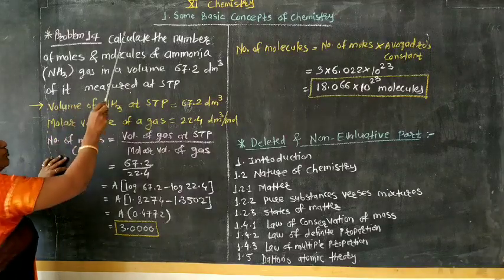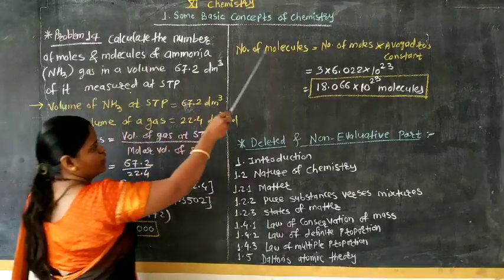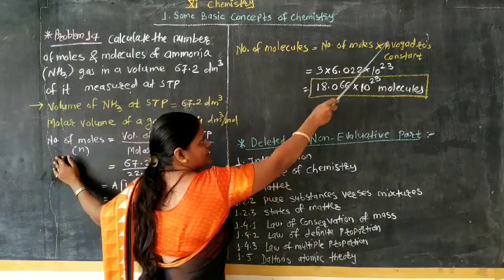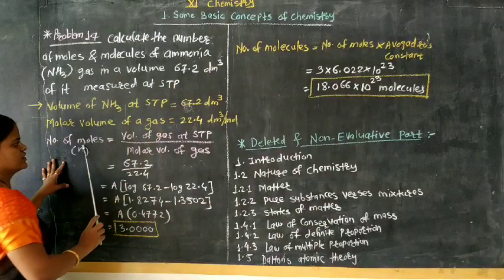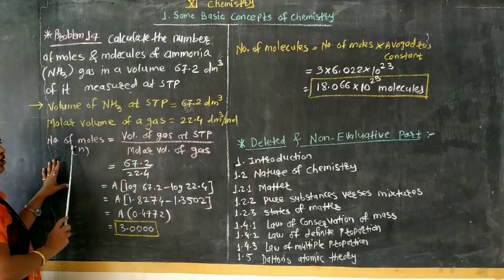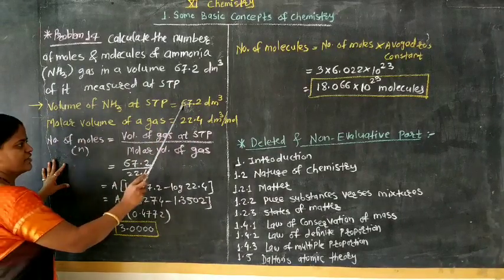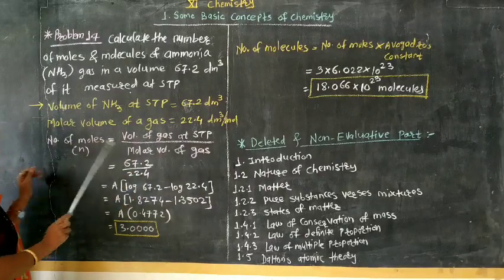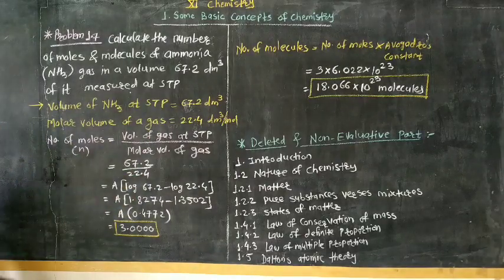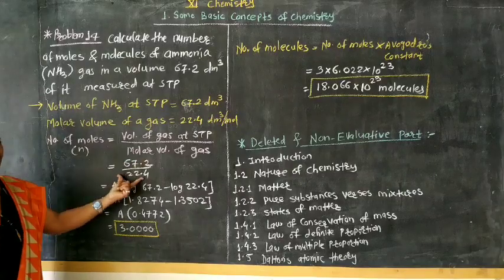Then how we can calculate number of molecules? Number of molecules is equal to number of moles into Avogadro's constant. Simple 2 formulas. For first formula, volume of gas is given and molar volume we know. Put up both the values: 67.2 upon 22.4.